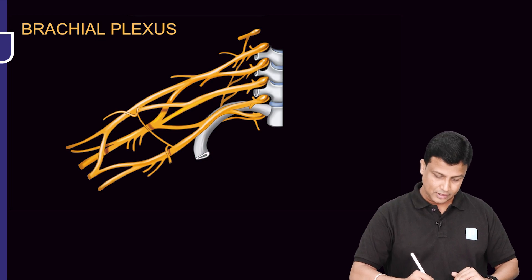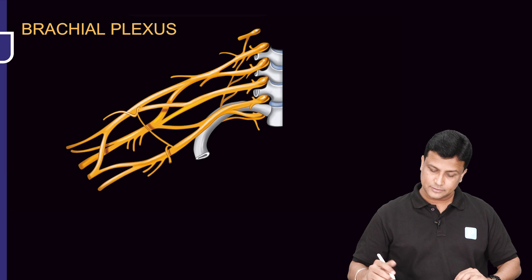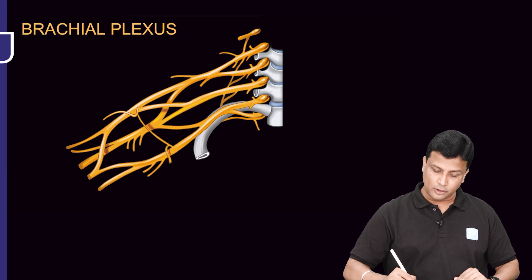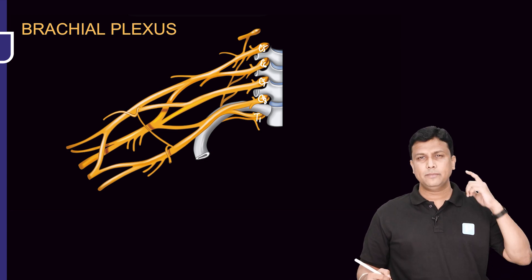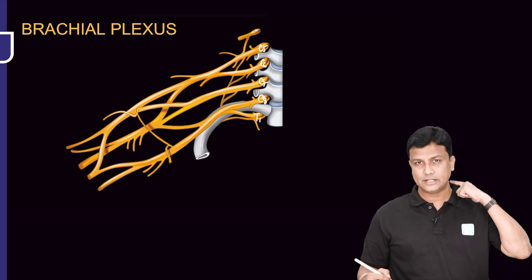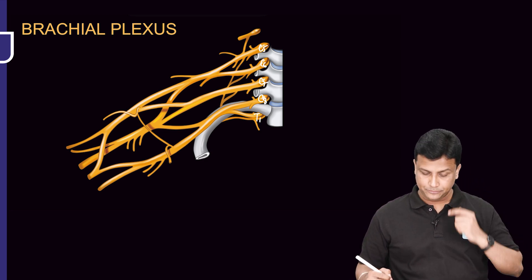The brachial plexus originates from the ventral rami of C5, C6, C7, C8, and T1.